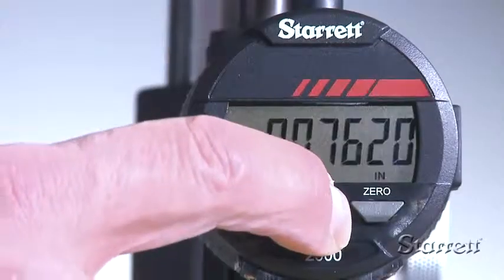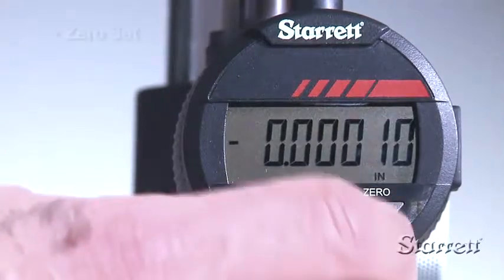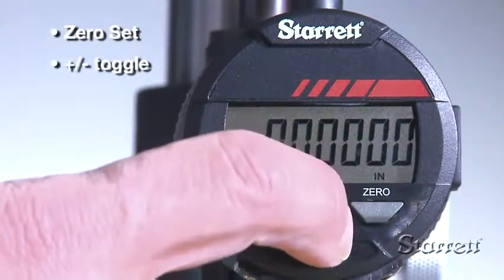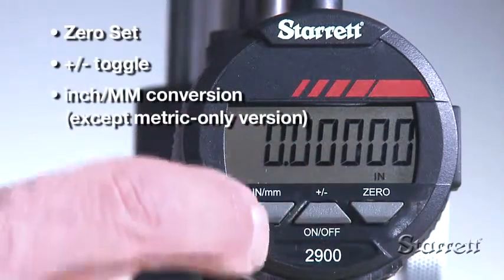The three button 2900-1 has power on off, zero set, plus minus counting direction toggle and inch millimeter conversion except on the metric model.